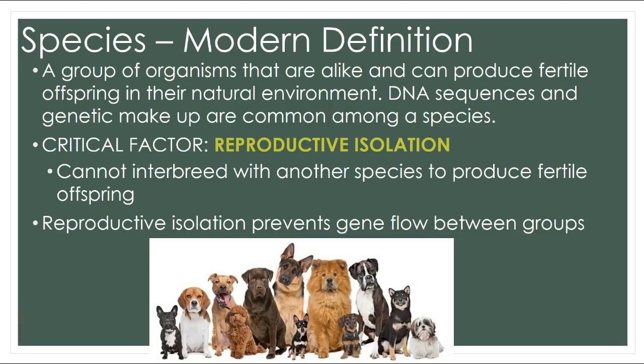The modern definition for species is a group of organisms that are alike, that can produce fertile offspring in their natural environment, and have DNA sequences and genetic makeup that are common among a species. One of the critical factors for determining whether two organisms belong to the same species is reproductive isolation — if two animals interbreed, they can only produce fertile offspring if they are of the same species, which prevents a flow of genes between groups.